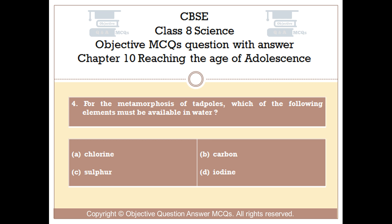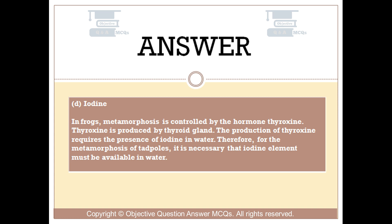The right answer is Option D: iodine. In frogs, metamorphosis is controlled by the hormone thyroxine. Thyroxine is produced by the thyroid gland. The production of thyroxine requires the presence of iodine in water. Therefore, for the metamorphosis of tadpoles, it is necessary that iodine must be available in water.